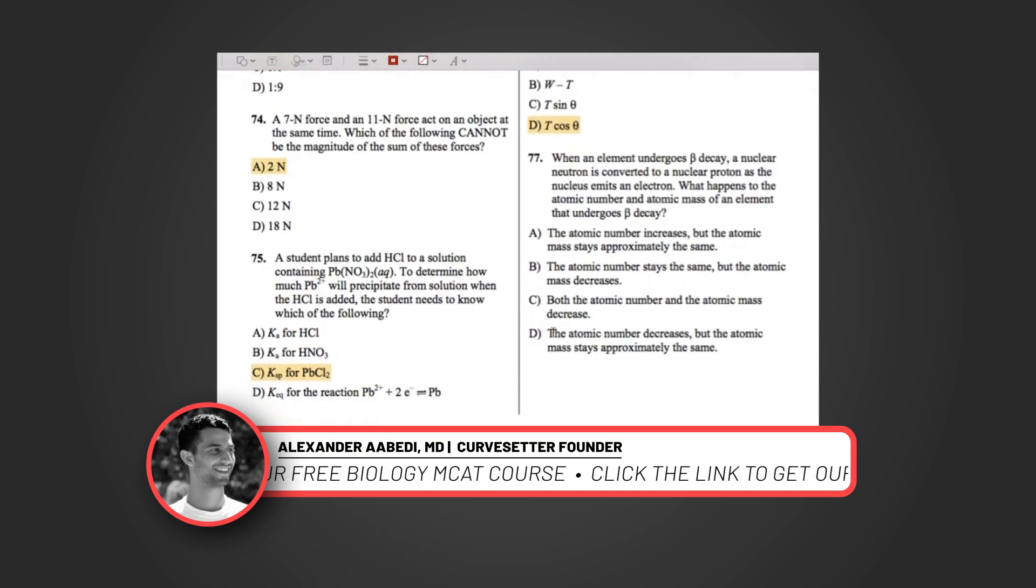Question 77: When an element undergoes beta decay, a nuclear neutron is converted into a nuclear proton as the nucleus emits an electron. I know this question actually gives you the description of beta decay, but I wouldn't count on getting that description if you ever encounter this type of problem again. So memorize the different types of decay, alpha, beta, stuff like that. It's definitely, I mean, you might not see it on your exam, but it could be there, so you should know it. What happens to the atomic number and atomic mass of an element that undergoes beta decay? So we know that protons and neutrons have approximately the same mass.